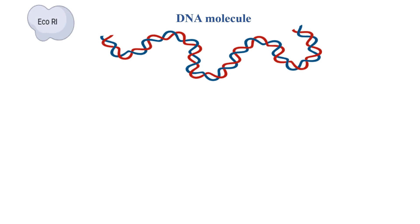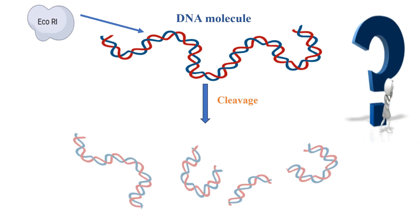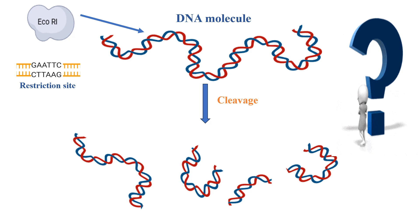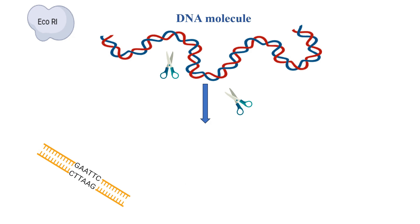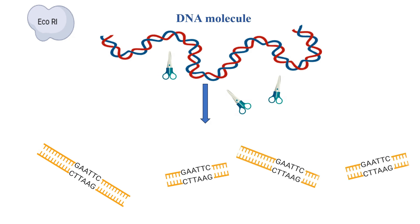A DNA molecule is cut by ECO-R1 into 4 fragments. How many restriction sites does ECO-R1 have in this DNA molecule? 3 restriction sites, since this enzyme cuts the DNA molecule into 4 fragments.